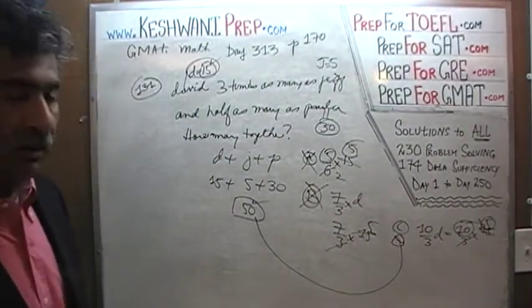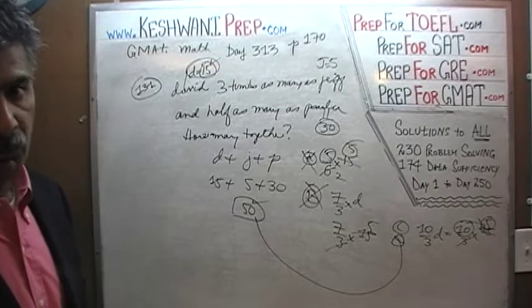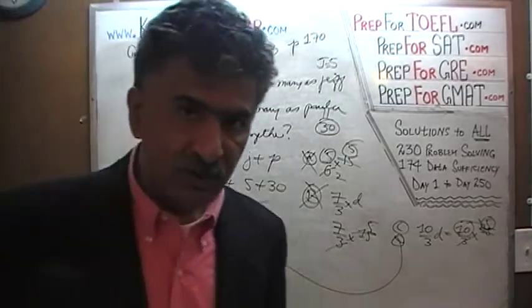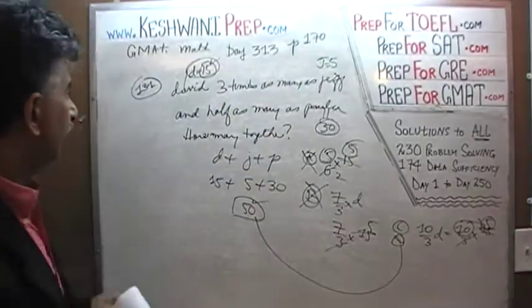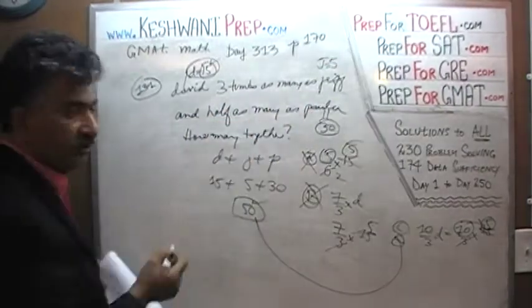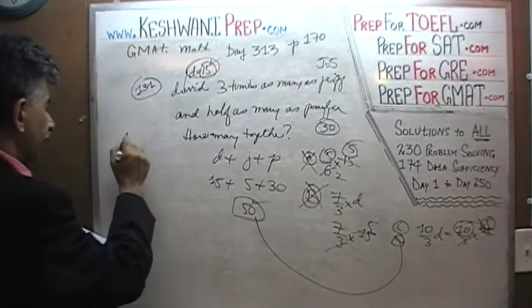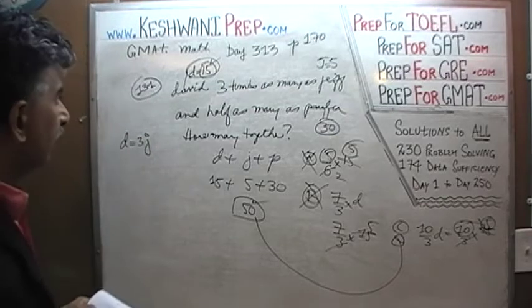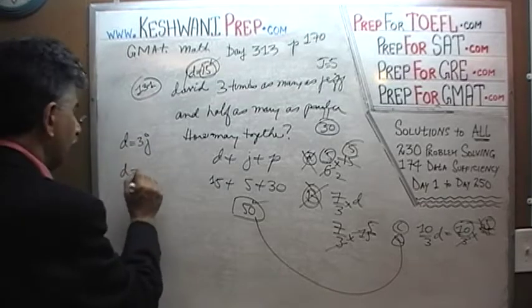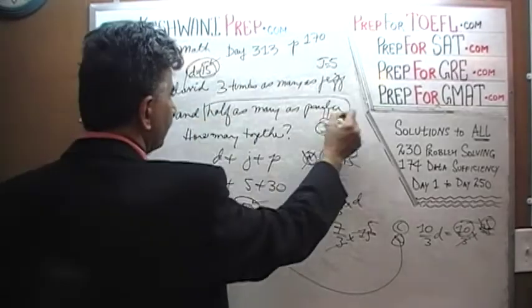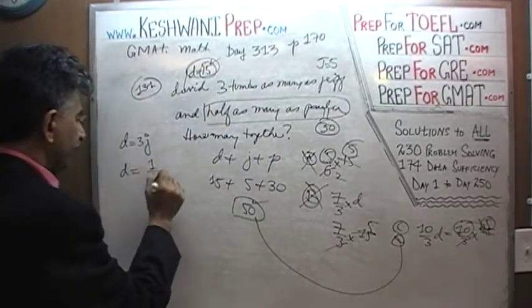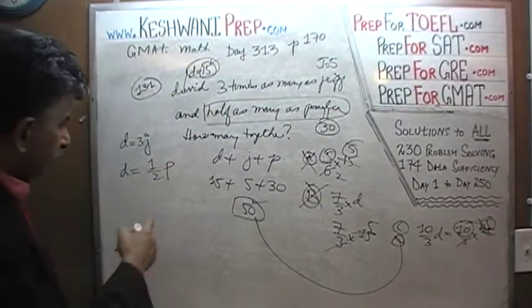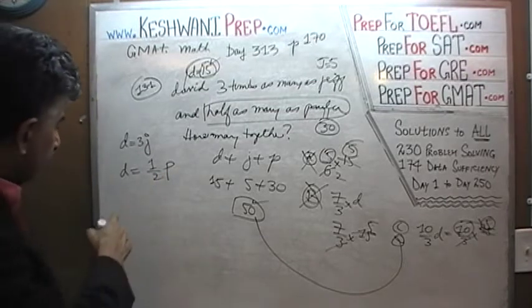So this was more of a plugging in method, this was more of an unconventional method. Now if you wanted to do it algebraically, it's actually not that bad, it's very simple. David we are told is 3 times as many as Jeff, so David is 3 times J. And David we are told is half as many as Paula, whatever the number P is, D is half as many.